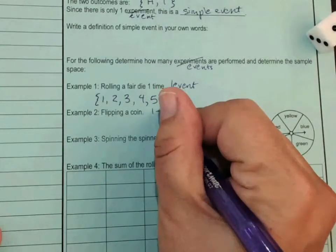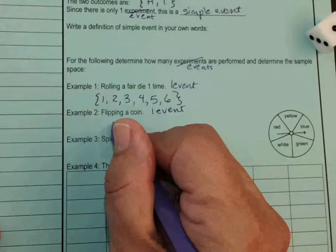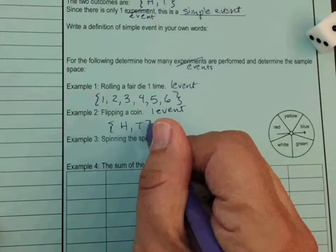Flipping a coin, just like I said earlier, that's one event. In fact, it says so up near the top there. And the sample space we already wrote was heads or tails.